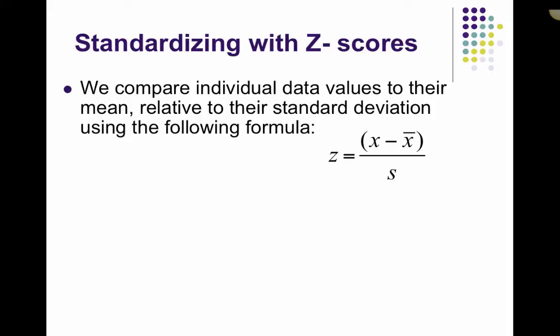So standardizing with the z-scores. We compare individual data values to their mean relative to their standard deviation. So by standardizing data, you're actually calculating a z-score. z equals x minus the mean over s, as we can see in this equation here. z represents your z-score, x is your observed data value, x-bar is your mean, and s is going to stand for standard deviation.